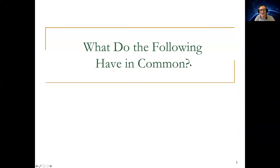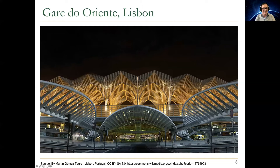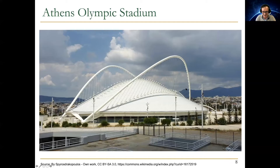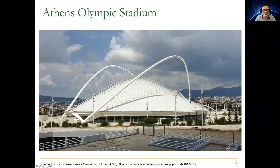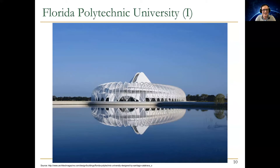The next question: what do the following have in common with Bahnhof Stadelhofen? This is Gare do Oriente and this is a beautiful building. Somebody said 'the architect' - and they're correct. This is the Milwaukee Art Museum, which kind of looks like Stadelhofen in its angles and resemblance. This is the Athens Olympic Stadium, the City of Arts and Sciences in Valencia.